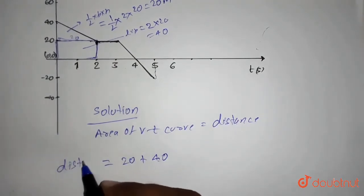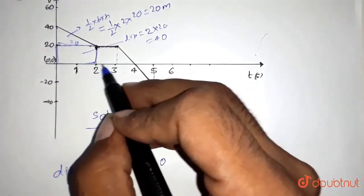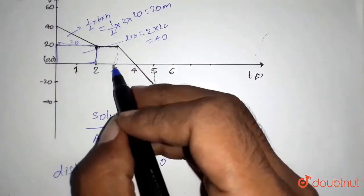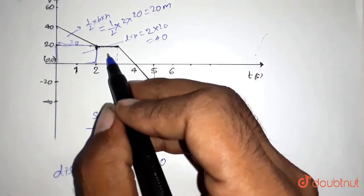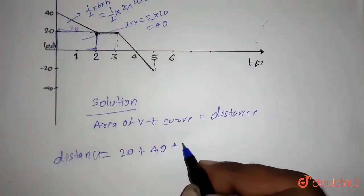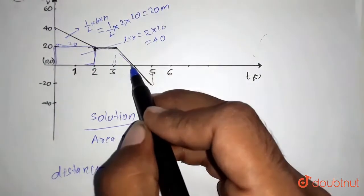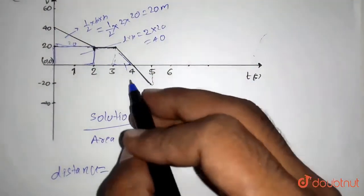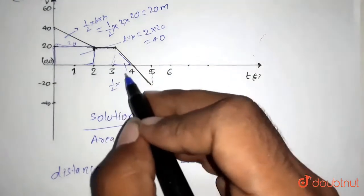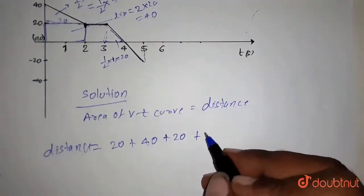Then again area of this part will be, again it is a rectangle. So it will be equals to 1 into 20. That is 20 meters. Plus then again it is a triangle. Area of this part will be half into base is 1 and height is 20. It is equals to 10 meters.